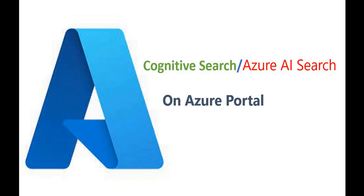Hello everyone, welcome back to the DotNet Office. In the previous video we discussed what is cognitive search, or Azure AI Search — we saw its key features and uses. In this video we will see how to create cognitive search on the Azure portal. To do that, first you need to have an account on the Azure portal, which requires payment information like a credit card.